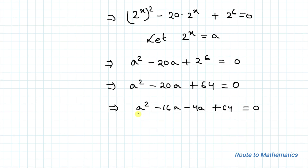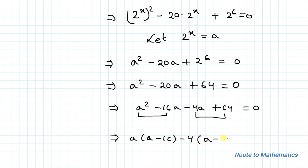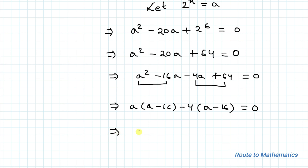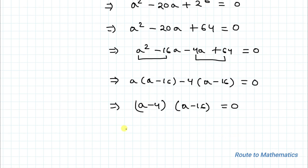Taking a common from the first two terms gives a(a minus 16), and taking minus 4 common from the last two terms gives minus 4(a minus 16), equaling 0. So we have (a minus 4)(a minus 16) equals 0, giving solutions a equals 4 or a equals 16.